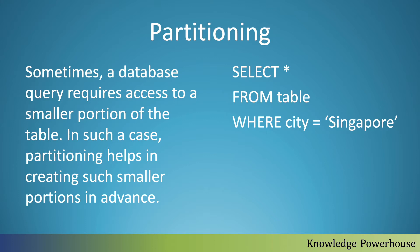Let's say you have a Facebook-like system where you have data from customers all over the world. In such a case, the query is only accessing users from one specific city. If you are selecting data from a table where the city is Singapore — a smaller city — and you need only those users, scanning through the whole table will be much slower. Instead, we can create partitions specific to cities, so if we have those smaller portions created in advance, it will be easier and much faster to run those queries.